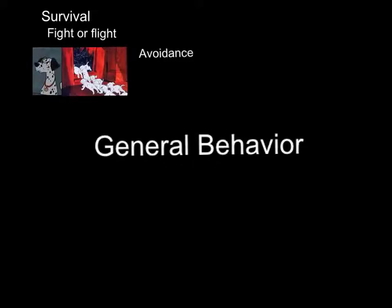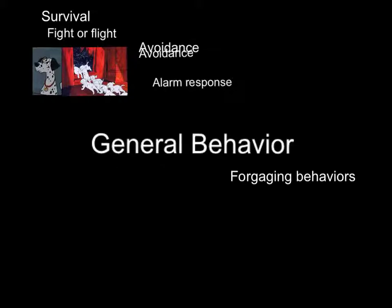General Behavior. One of the survival behaviors is fight or flight — basically when an animal can choose to fight or run away from the situation. Avoidance is when an animal chooses to completely avoid a dangerous situation, so it can camouflage or run away. Alarm response is when an animal sends out a warning when it predicts that a predator is near. Foraging behaviors are responses to chemical or visual stimuli.